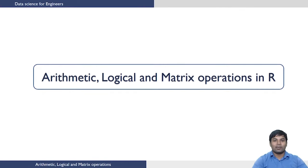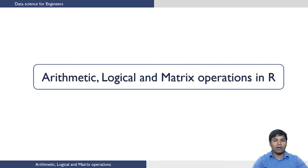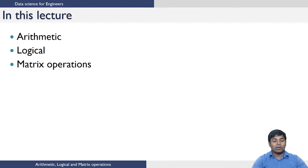Welcome to lecture 6 of the R module in the course Data Science for Engineers. In the previous lectures we have seen various data types of R, how to access or delete the elements of the different data types and so on. Now it's time to see how to perform arithmetic, logical and matrix operations in R. In this lecture we are going to see how to do arithmetic operations, logical operations and matrix operations in R.